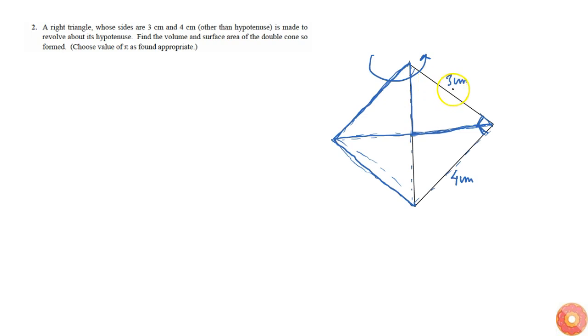Given that a right triangle with sides 3 and 4 centimeters, this is 3 centimeters and this is 4 centimeters, it's rotating about its hypotenuse. So triangle AOB, I will say this C, triangle AOB is a given triangle.